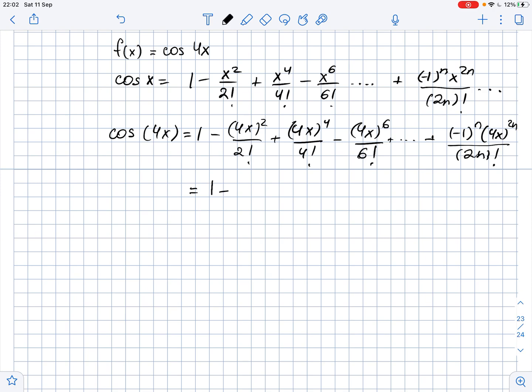This equals 1 minus 16x squared over 2 factorial plus 256x to the fourth power over 4 factorial minus 4096x to the sixth power over 6 factorial and so on.